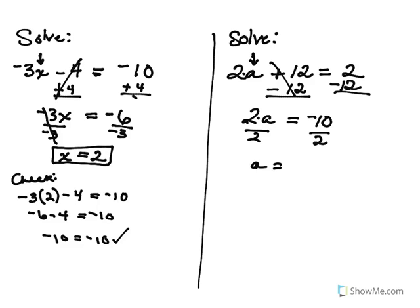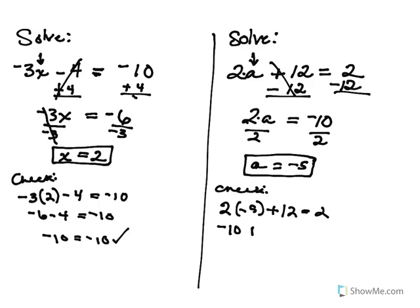So I'm going to divide both sides by 2 and I get a is negative 5. And again, feel free to check your work so you know it's correct. Math is easy, you just gotta practice.